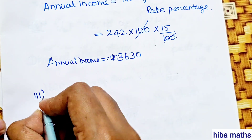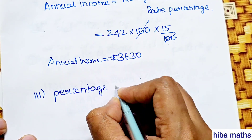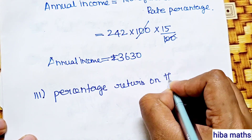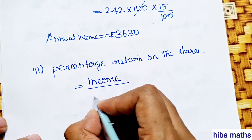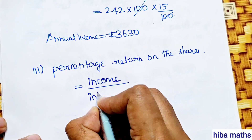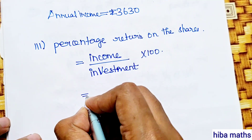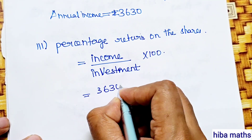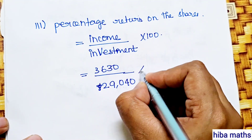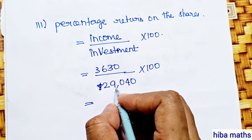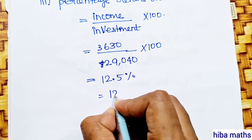Third part: percentage return on investment. Percentage return equals annual income divided by investment, into 100. Annual income is 2630, investment is 29,040, into 100. Dividing gives us 12.5%. Therefore, the percentage return is 12.5%.